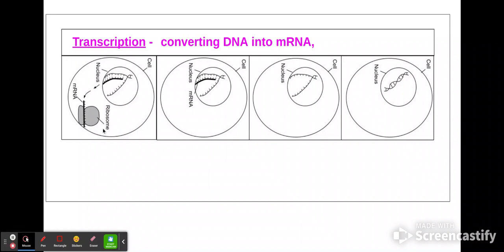Where is this happening? Where do we make the messenger RNA? In the nucleus. So transcription happens in the nucleus, and that's what we want to make sure we include. That's because the DNA can't leave — DNA cannot leave the nucleus, so the mRNA has to be made there.